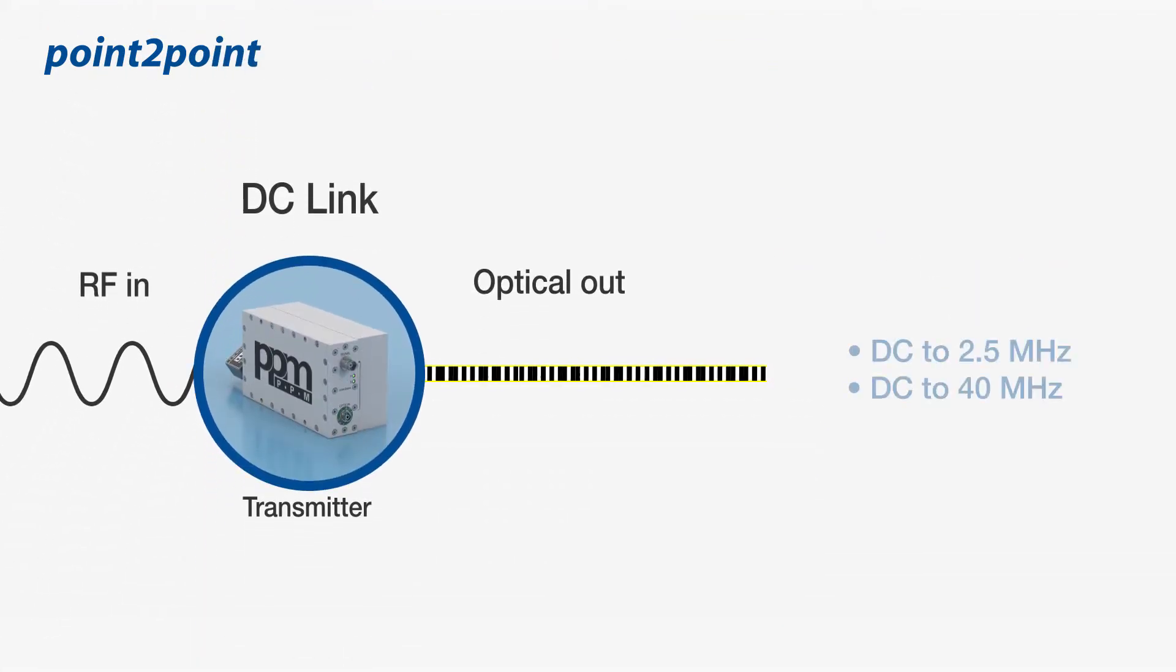DC links convert the input into a 14-bit digital signal before optical conversion. Digitization allows low frequencies to be transported in bandwidths up to 40 MHz.